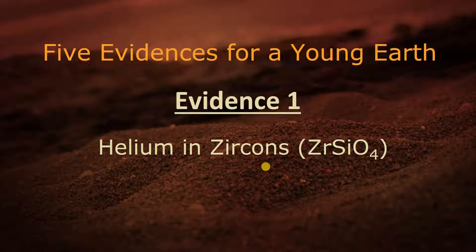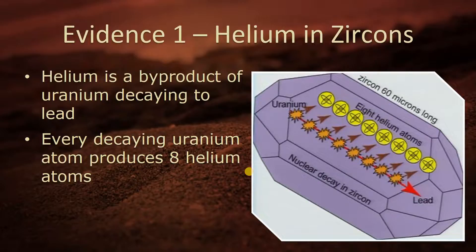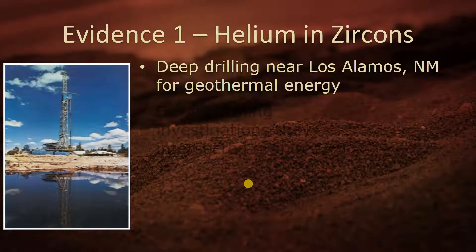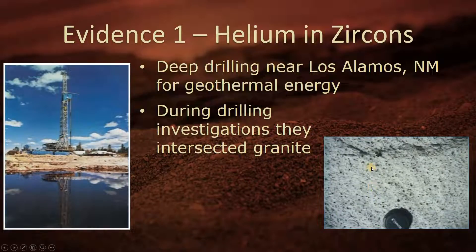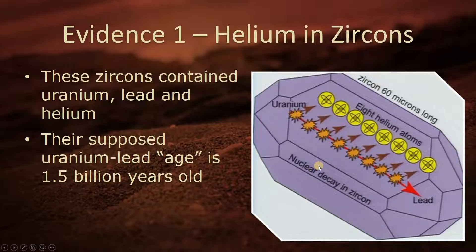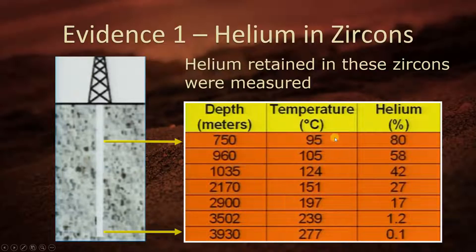Evidence number one: helium and zircons. Helium is a byproduct when uranium decays to lead — every decaying uranium atom produces eight helium atoms. During deep drilling near Los Alamos, New Mexico for geothermal energy, investigators intersected granite and recovered zircon crystals. These zircons contained uranium, lead, and helium, but their supposed uranium-lead age is 1.5 billion years old. The helium retained in these zircons was measured at different depths — 3,900 meters down produced different temperatures than 750 meters. Helium leaks out of the zircon crystal because helium is the second lightest element — lightweight, fast-moving, and slippery.